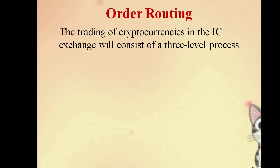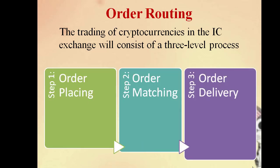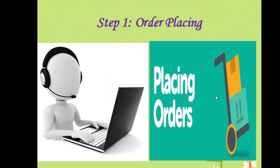The entire process will be done automatically without any human intervention. The trading of cryptocurrency on the IC exchange will involve a three-level process. In here you can see: Step 1 - Order Placing, Step 2 - Order Matching, and Step 3 - Order Delivery.